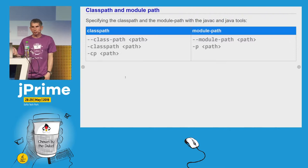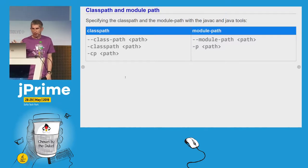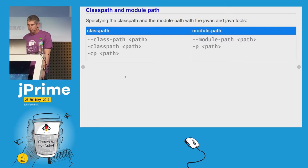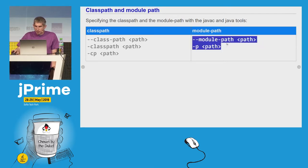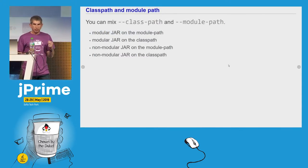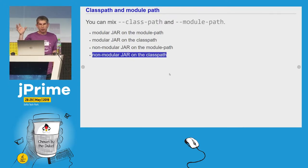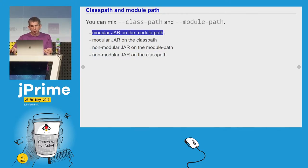Before Java 9, we needed to put all artifacts in our dependency graph on the class path. But now we also have a module path, and this is where our modular code should reside, because modules are resolved from the module path. We can specify the module path using command line options when we use the javac or java tools. Now, depending on the type of an artifact — if it's modular or non-modular — and on its location, on the class path or on the module path, we have four possible combinations. Before Java 9, we only had non-modular artifacts on the class path. Its modular counterpart is having a modular artifact on the module path.